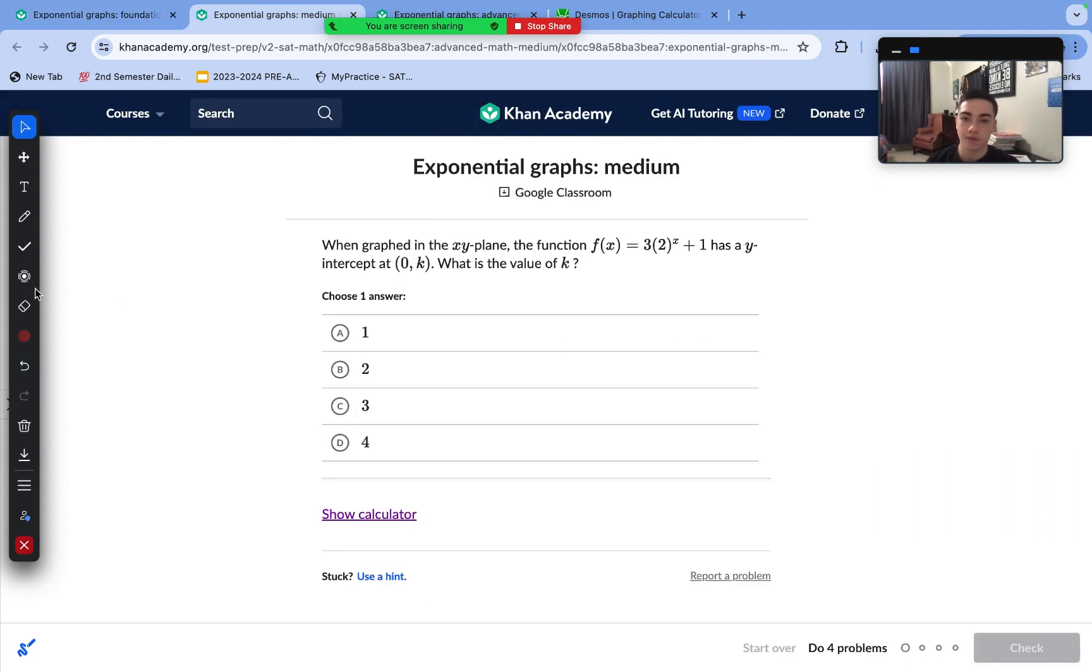Onto our medium difficulty level. When graphed in the xy-plane, here is our function equation, and it has a y-intercept at (0, k). That means we're going to substitute 0 into our function, and the corresponding y-value is going to equal k. So we take our equation, 3(2^x) and replace x with 0 plus 1. 2 to the power of 0 is 1, 3 times 1 is 3, 3 plus 1 is 4. That means k equals 4.